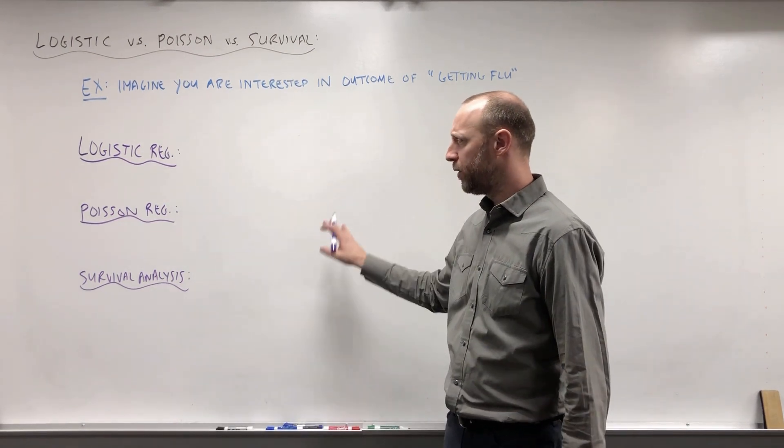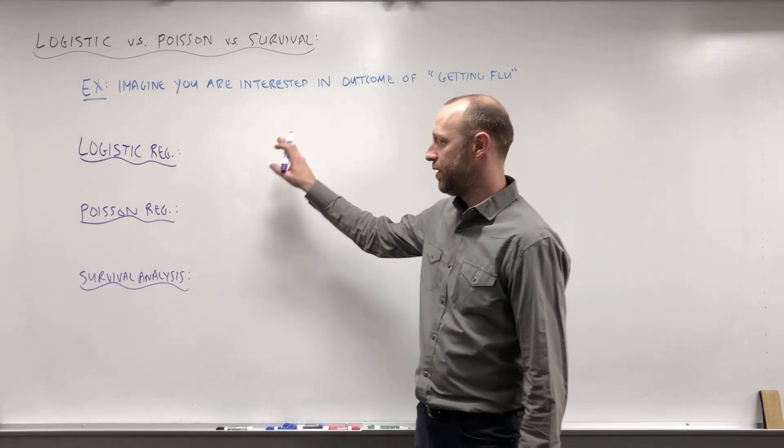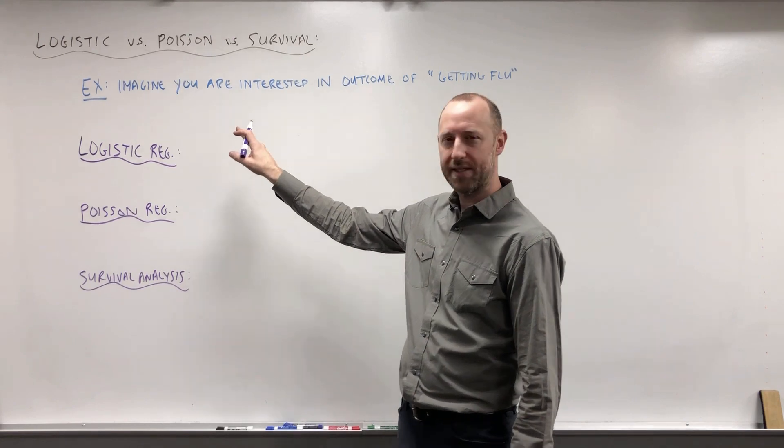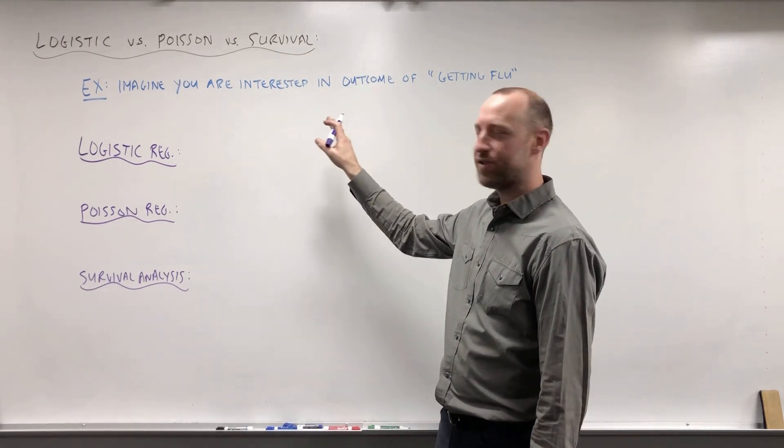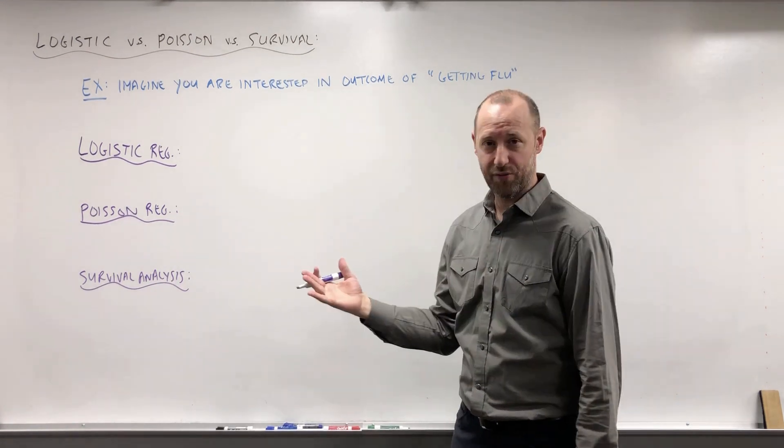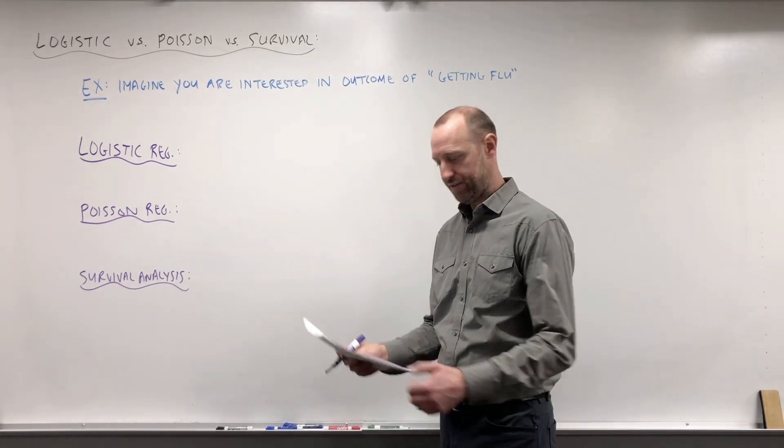I want to quickly compare and contrast these three models and show how we might use them in the context of studying an outcome variable. Let's imagine we're interested in studying something about getting the flu, if someone gets the flu in a particular season.